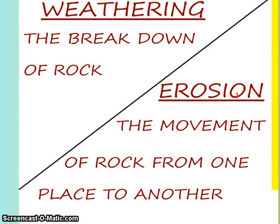Find both of these words on your note-taking sheet. Weathering is the breaking down of rock — whenever something is being broken down we call it weathering. Erosion is something different. Erosion is when that rock actually starts to move — it can move through water or because of wind. Erosion is the movement of rock from one place to another.